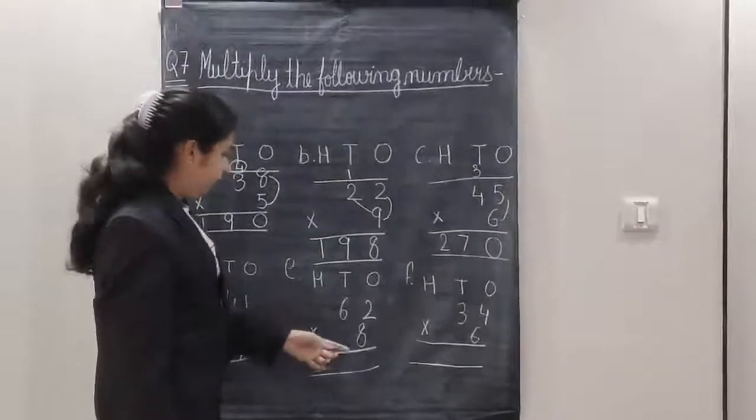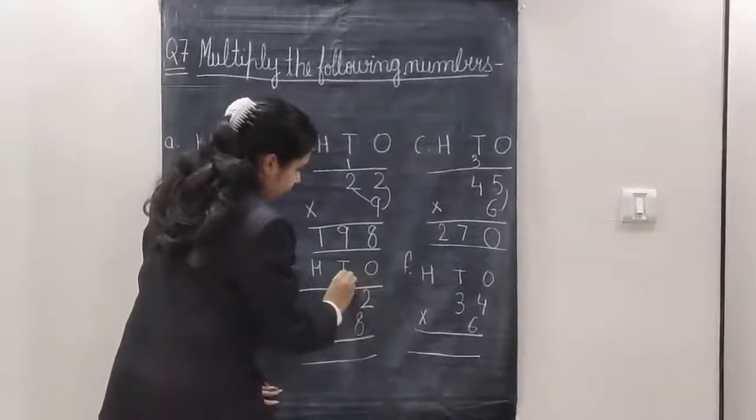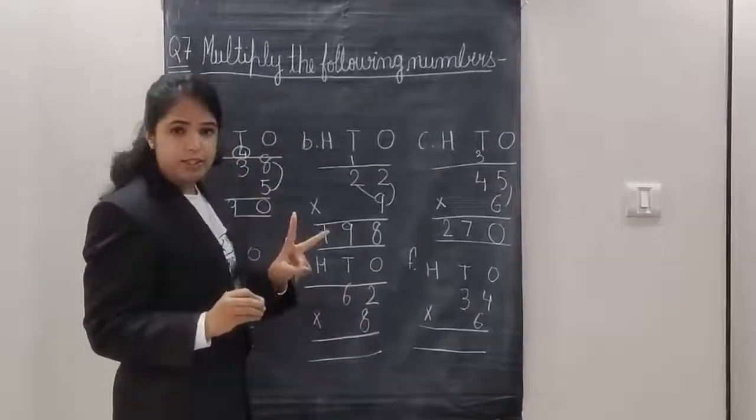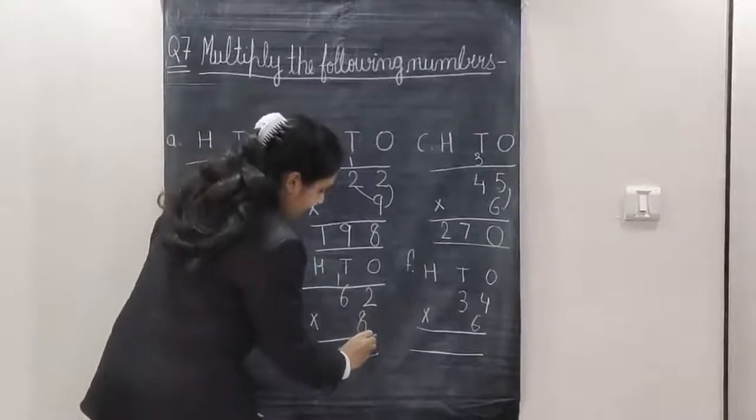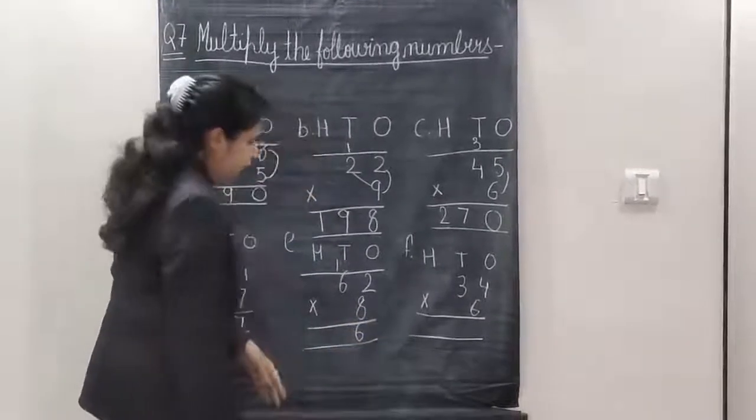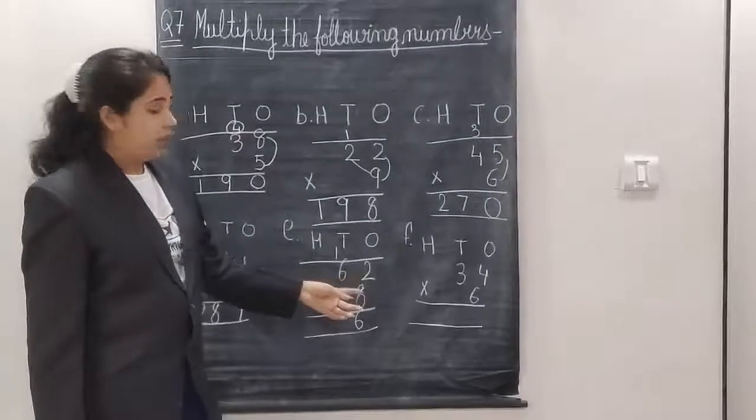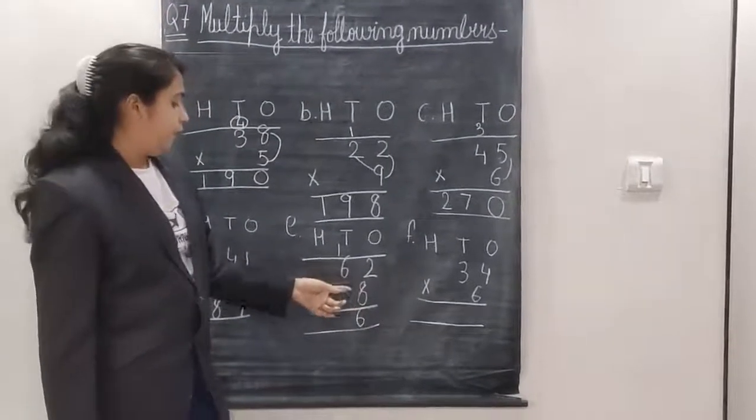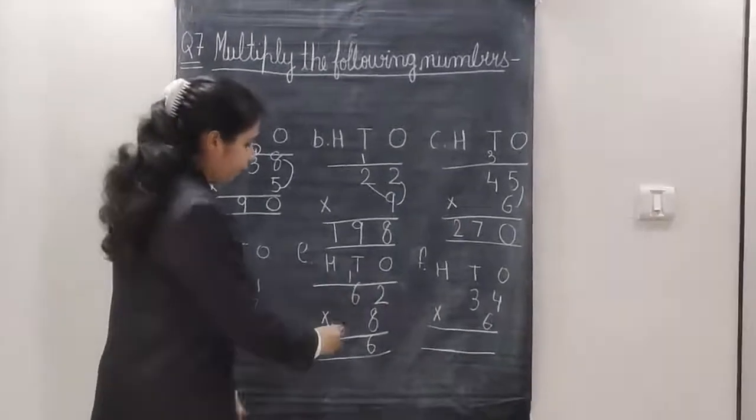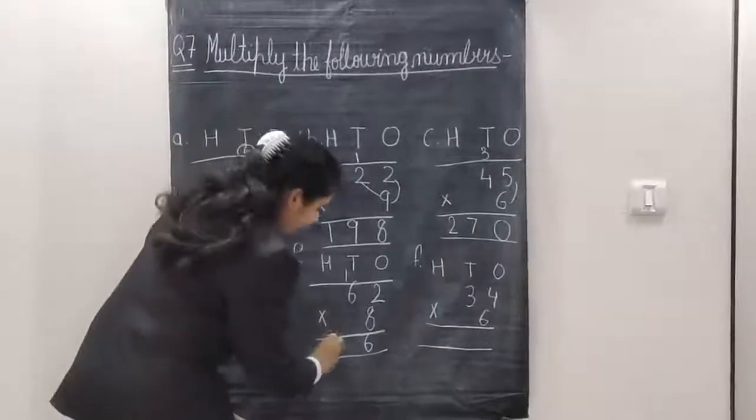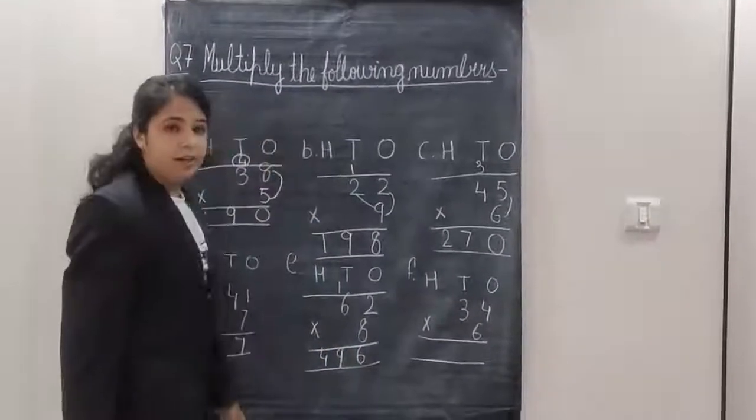Sum number E. 8 ones are 8. 8 twos are 16. Answer came in 2 digits. So, we will carry over. Now, 8 sixes are, which is 48. 48 plus 1, 49. So, my answer is 496.